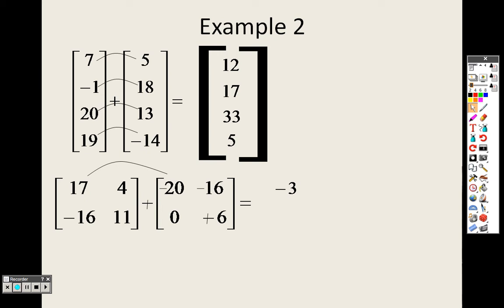4 plus negative 16 is negative 12. Negative 16 plus 0 is negative 16, 11 plus 6 is 17. And you put it in the matrix. That's it. It's all adding and subtracting.